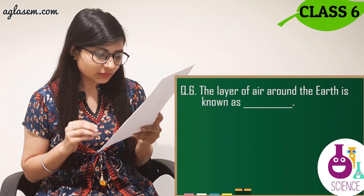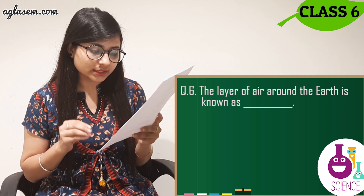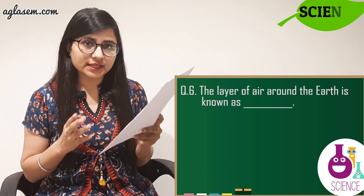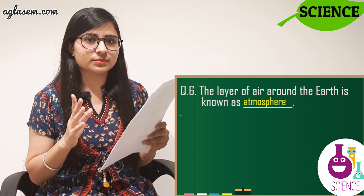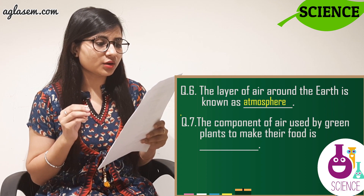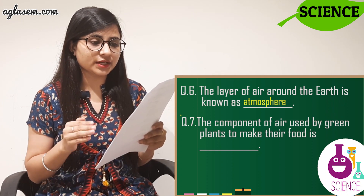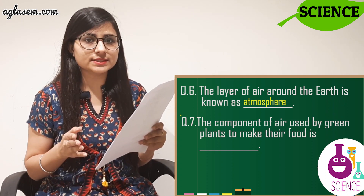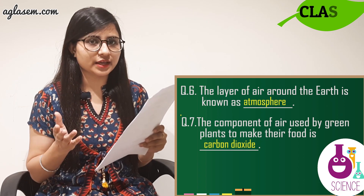Question number 6: The layer of air around the earth is known as — the answer is: atmosphere. Question number 7: The component of air used by green plants to make their food is — the answer is: carbon dioxide.